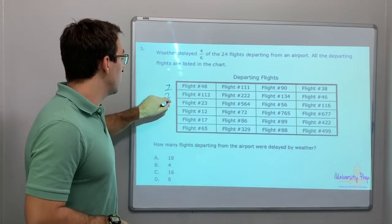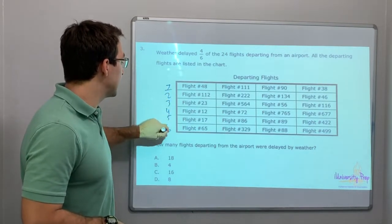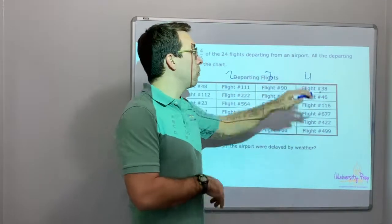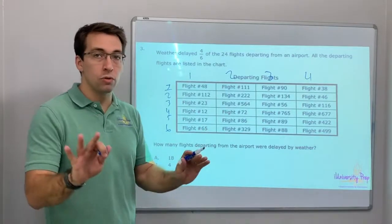One, two, three, four, five, six. And this is one, two, three, four. Four times six is 24. We knew that.